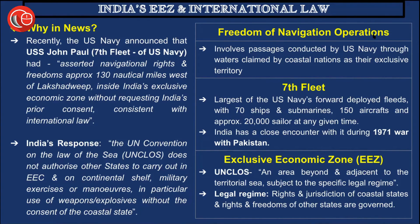Freedom of navigation operations involve passages conducted by the US Navy through waters claimed by coastal nations as their exclusive territory, just as India is claiming in this case. The 7th Fleet of the US Navy is the largest of its forward-deployed fleets, with 70 ships and submarines, 150 aircraft, and approximately 20,000 sailors at any given time. India had a close encounter with this fleet during the 1971 war with Pakistan.